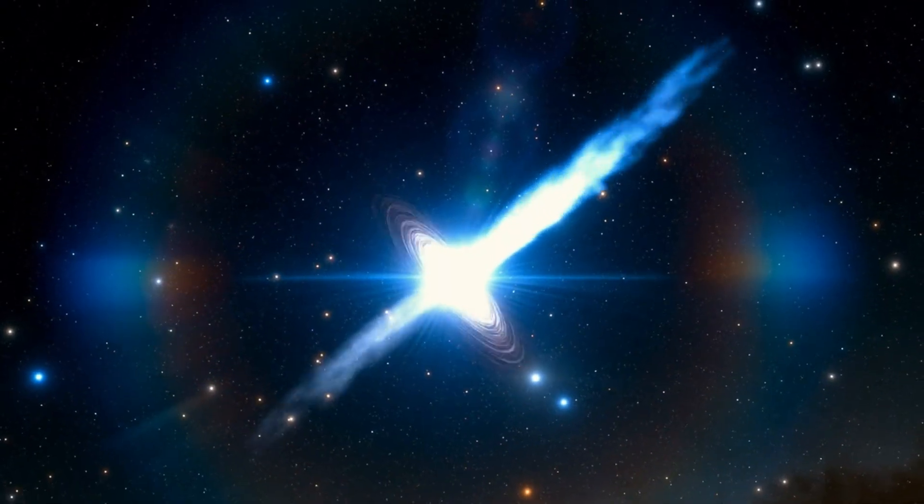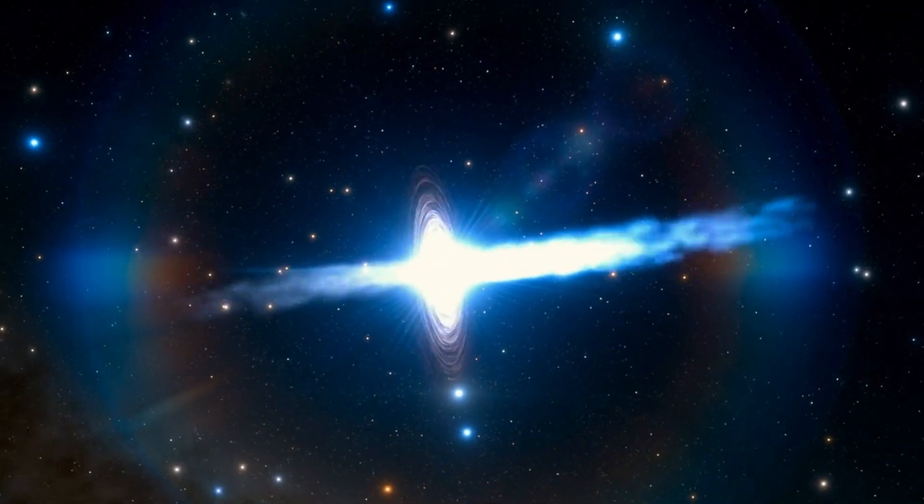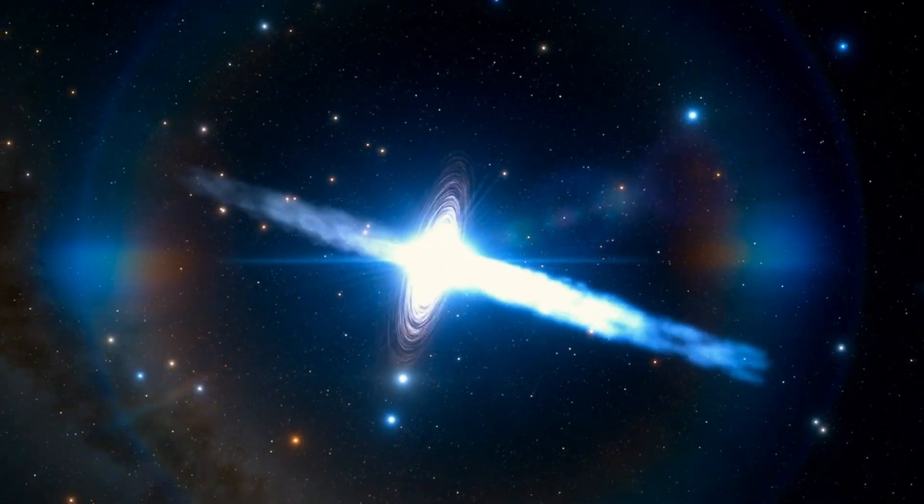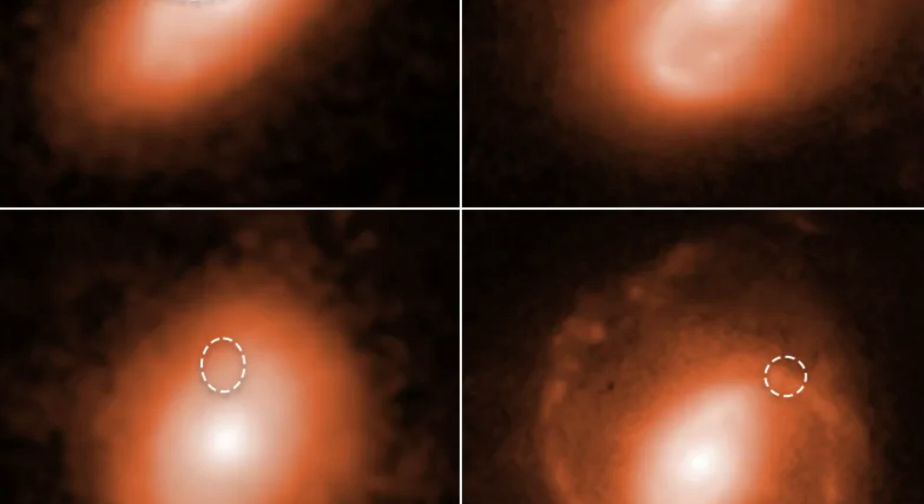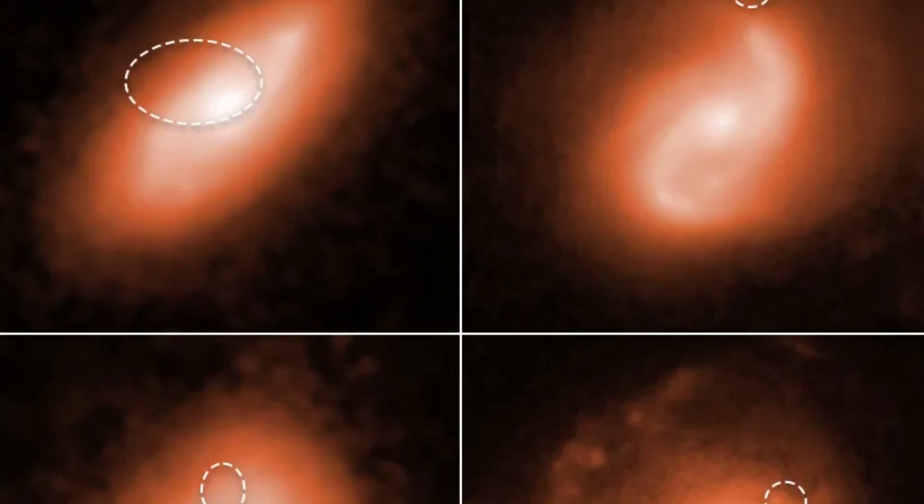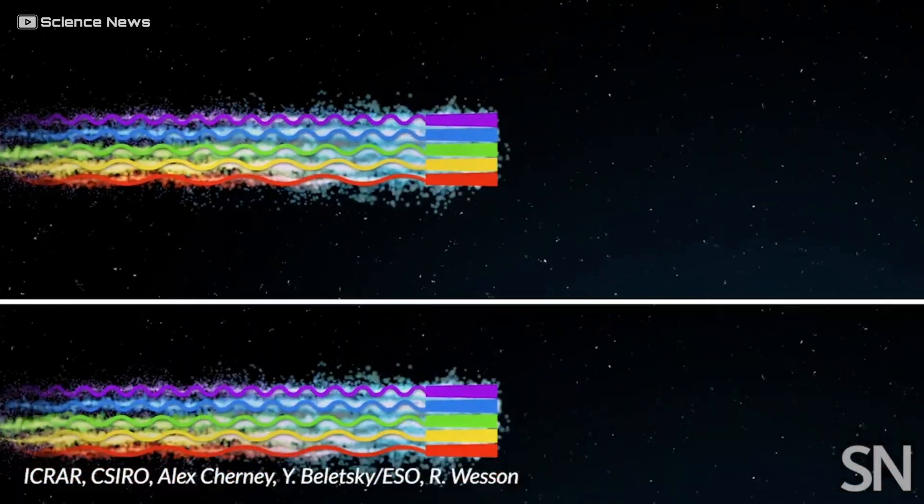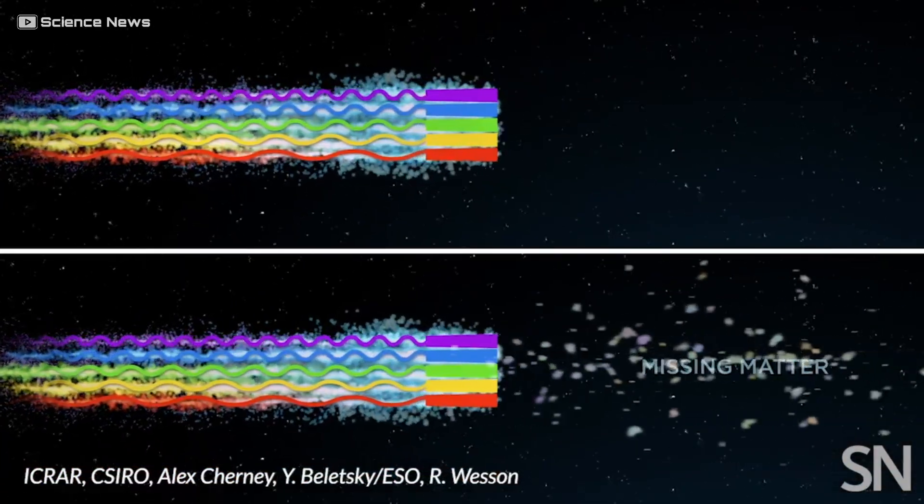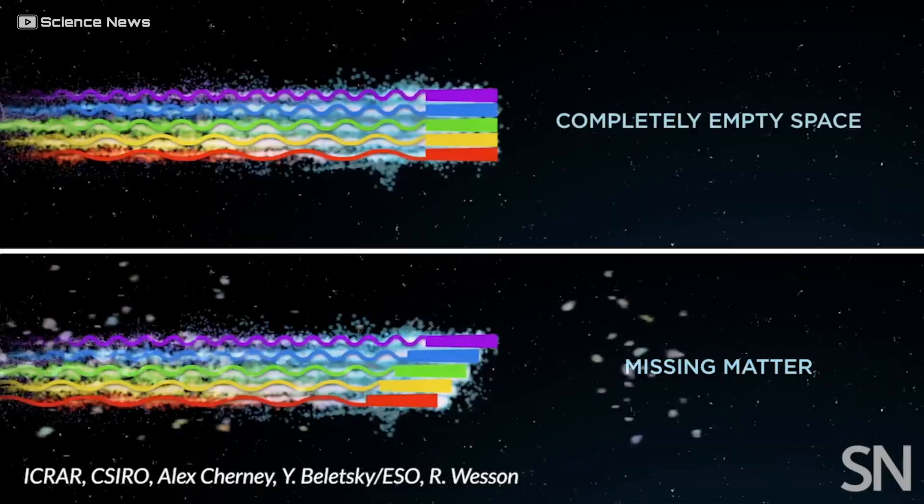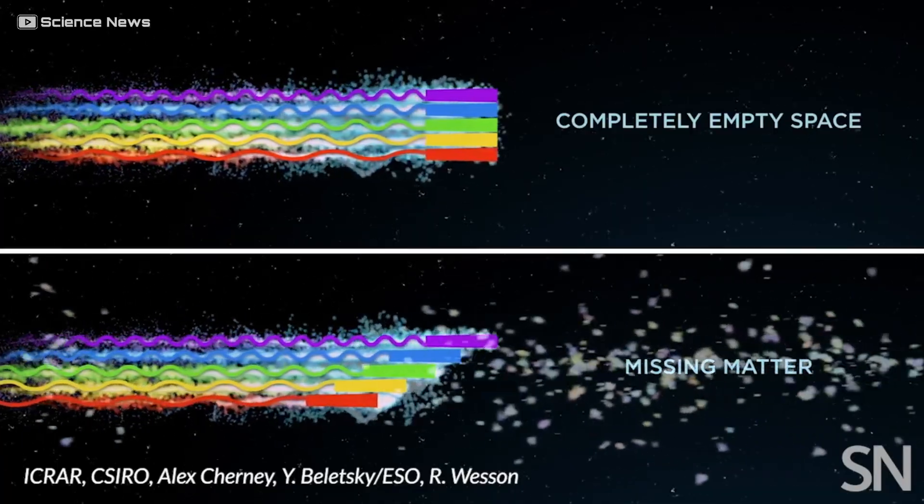Some repeat, some don't. Each one carries as much energy as our sun emits in a full day. All packed into the time it takes a hummingbird to beat its wings. No one knows what causes them. Magnetars, black holes, cosmic strings, alien engineering. Every possibility has been on the table.